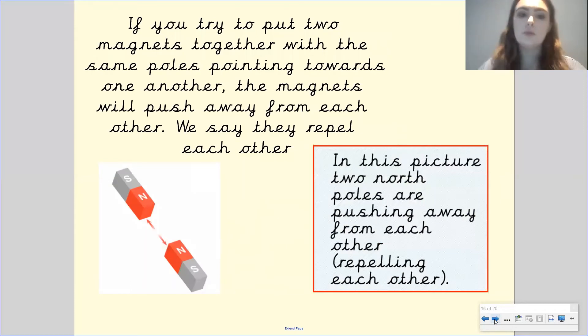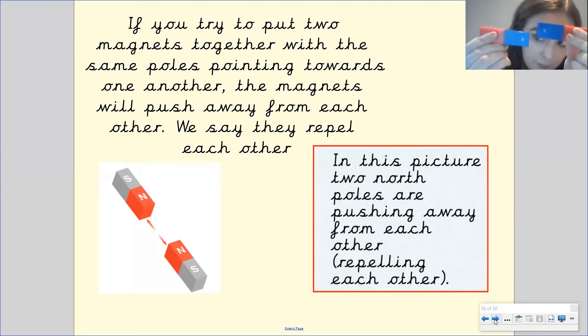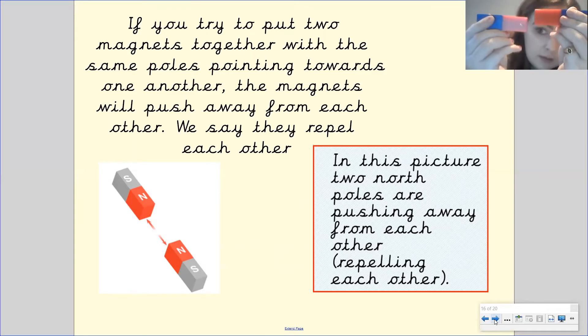If you try to put two magnets together with the same poles pointing towards one another the magnets will push away from each other. We say they repel one another. So let me show you. Here's a magnet that's the south pole there. There's another magnet with the south pole. If I try and put them together they push each other away and it's the same if I do it with the north poles. I push them together they push one another away. They're repelling one another. In this picture two north poles are pushing away from each other. They're repelling and you can see the arrows are pointing them away from one another.